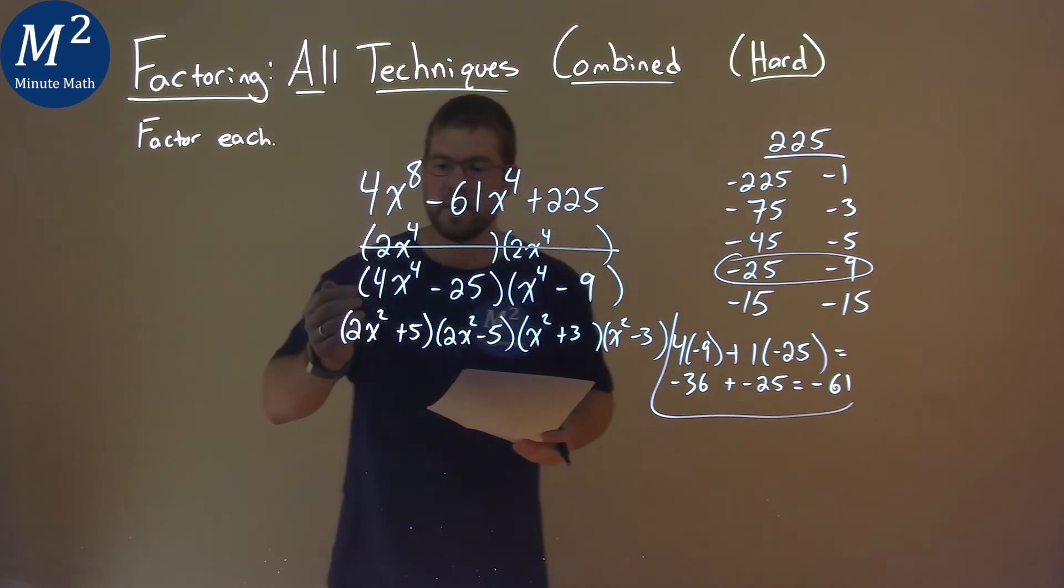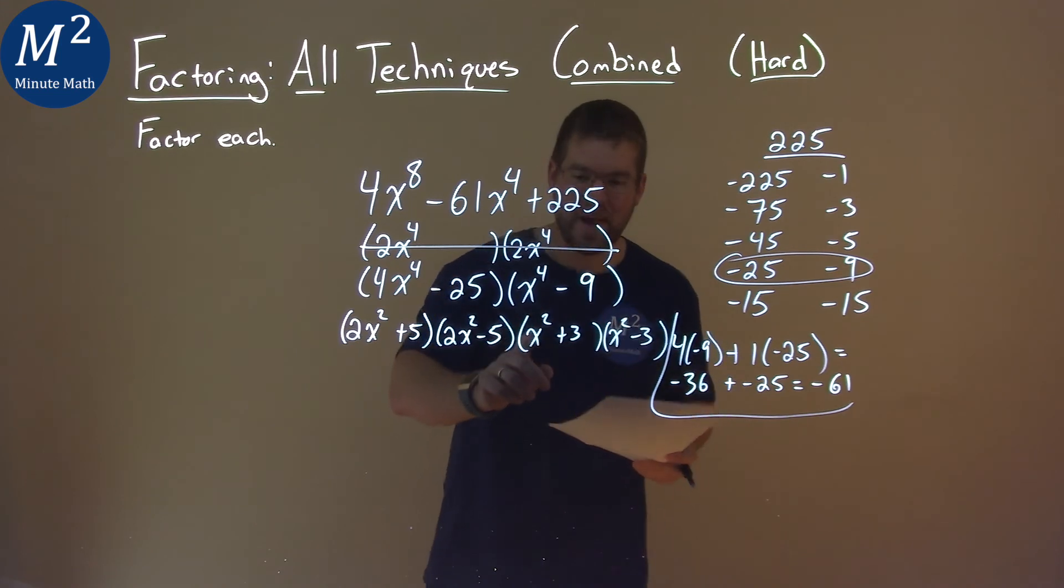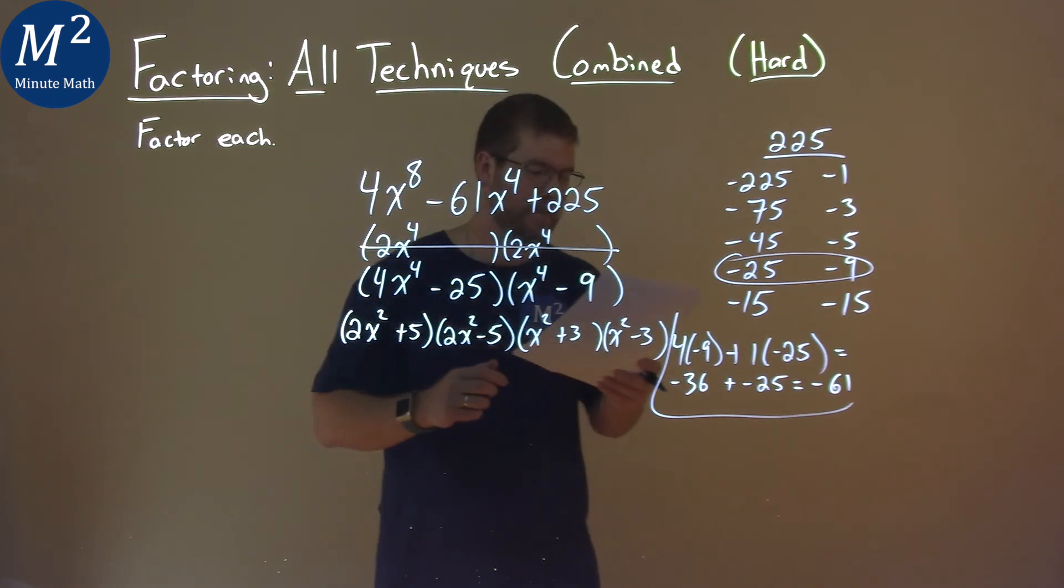And so our final answer here is 2x squared plus 5 times 2x squared minus 5 times x squared plus 3 times x squared minus 3.